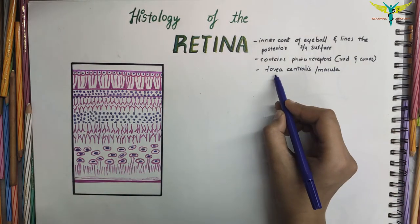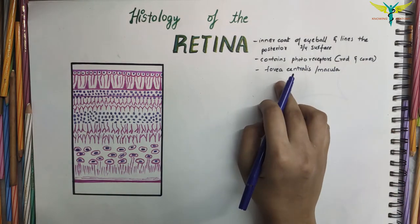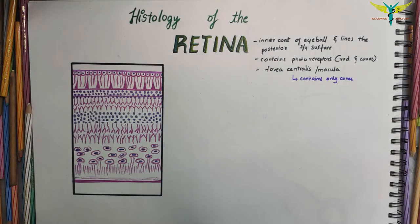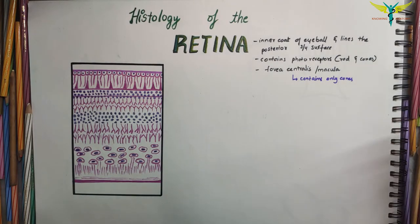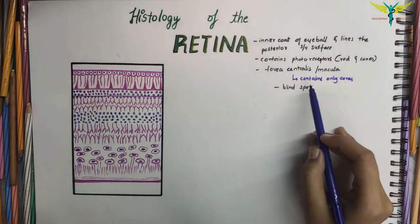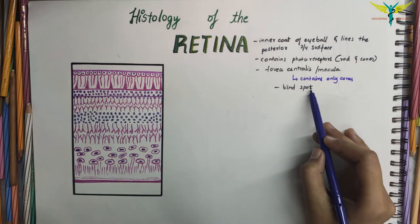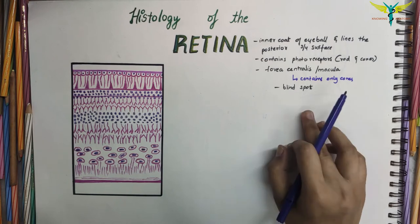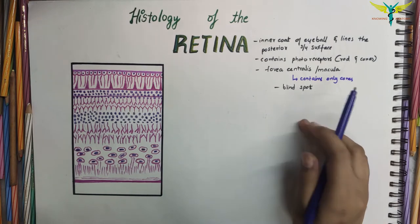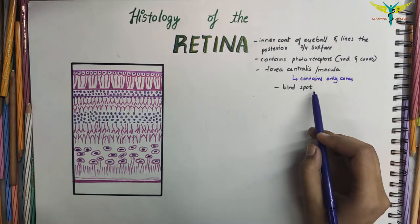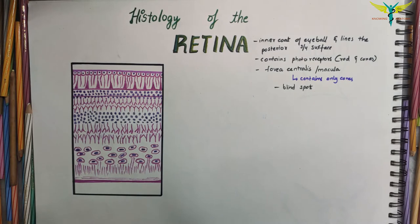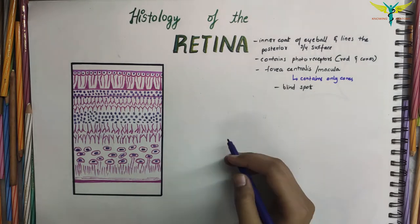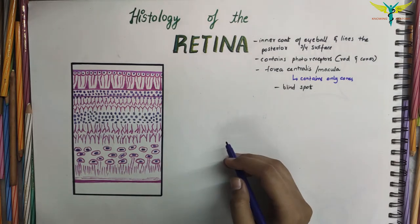This area contains only cones. The retina also has a blind spot — the optic disc — where the optic nerve leaves the eye, and there are no photoreceptor cells in this area. Now let's see the layers of the retina.